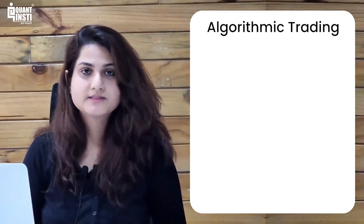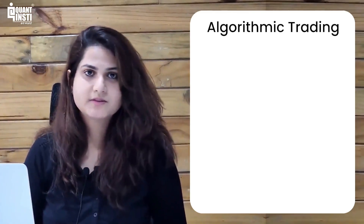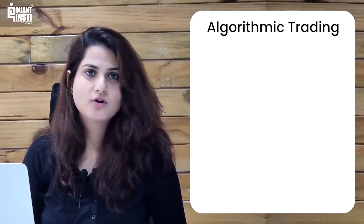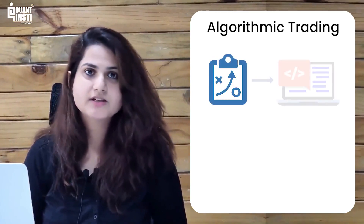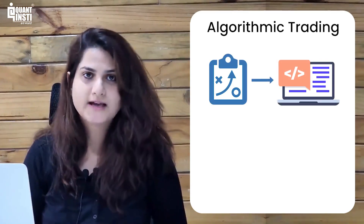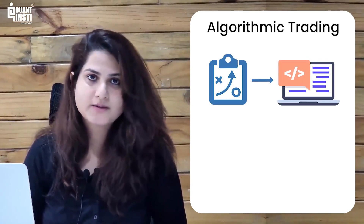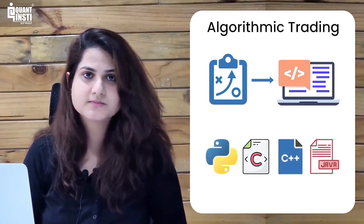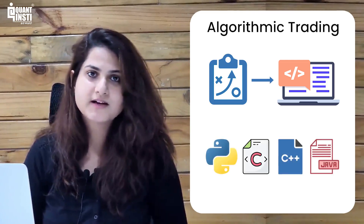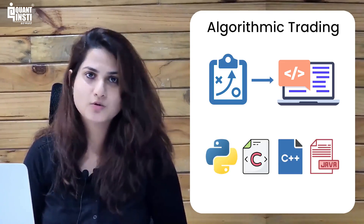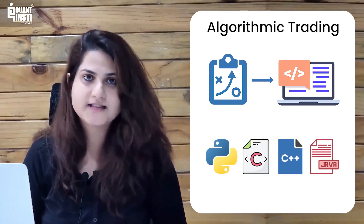Algorithmic trading is a simple concept. It is just a process of converting your trading strategy into computer code with the help of a computer language. There are a lot of computer languages available such as Python, C, C++, and Java. Your trading strategy can be converted into algorithmic trading code with the help of any of these languages.